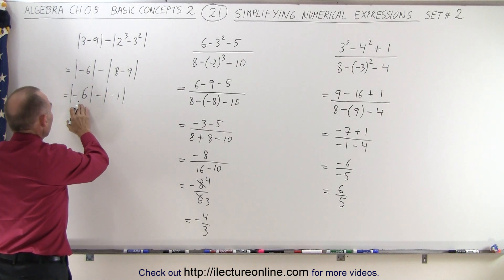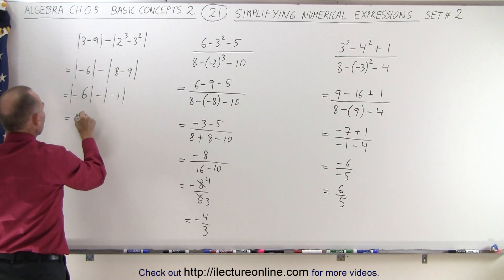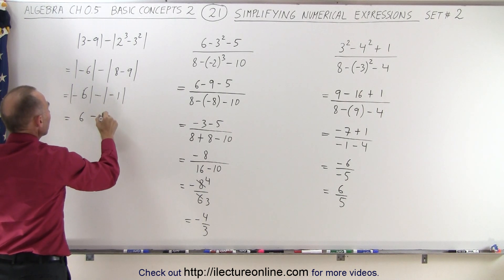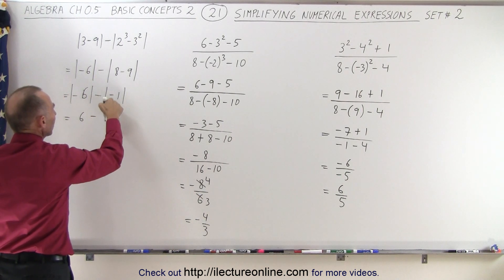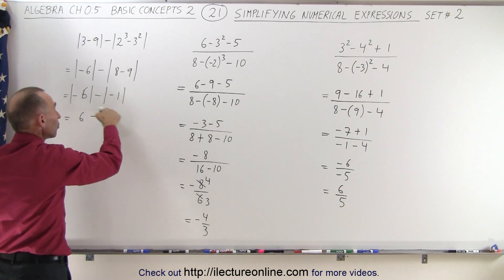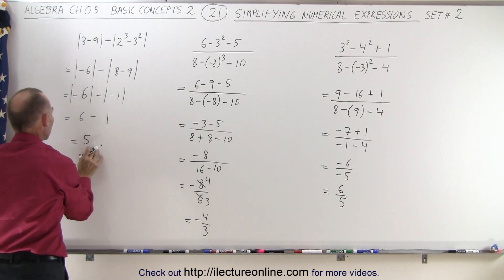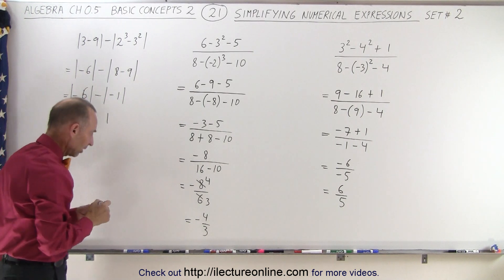Now I can apply the principle of the absolute value signs. I can then change what's inside to a positive number and remove the absolute value signs. So this becomes a positive 6 minus a positive 1. The absolute value signs around the negative 1 make the negative 1 into a positive 1. But I'm still subtracting the results of that.